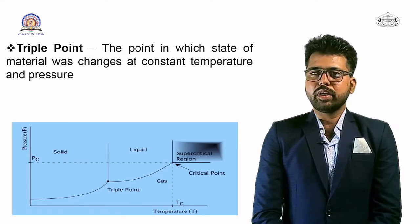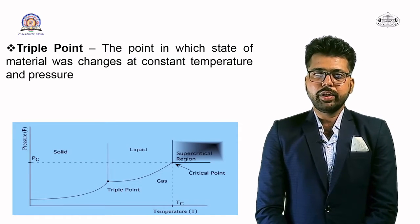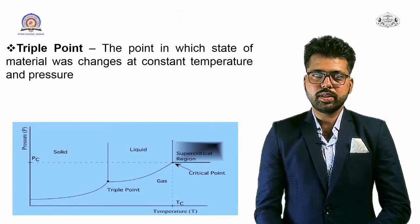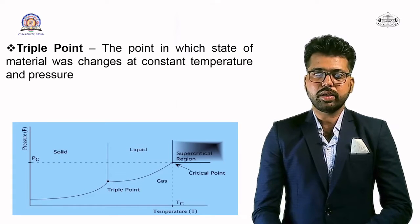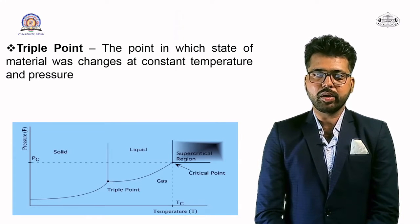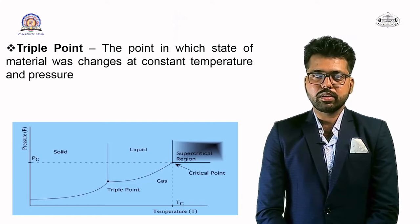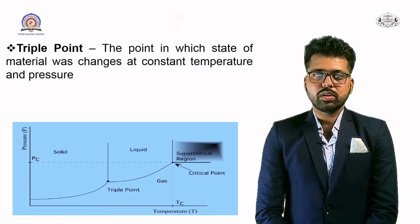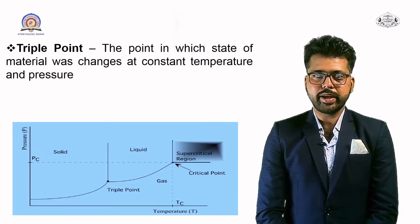Triple point is the point at which the state of a material changes at a constant temperature and pressure. The pressure-temperature (PT) diagram clearly shows the critical point, supercritical region, three states of matter — solid, liquid, gas — and the triple point.